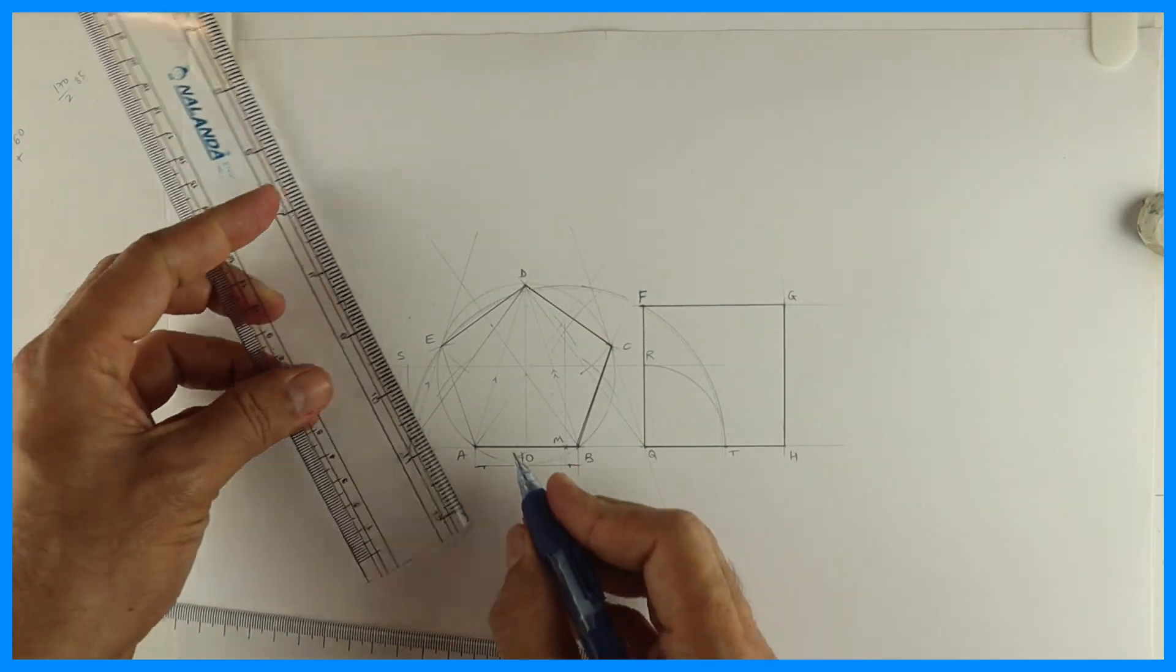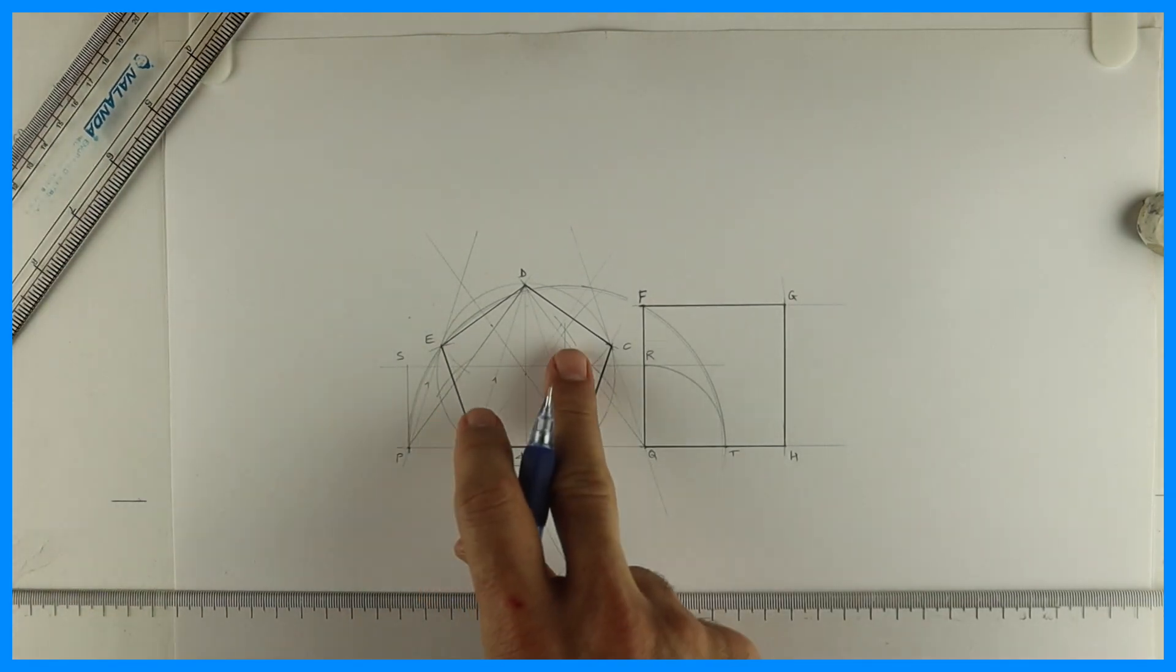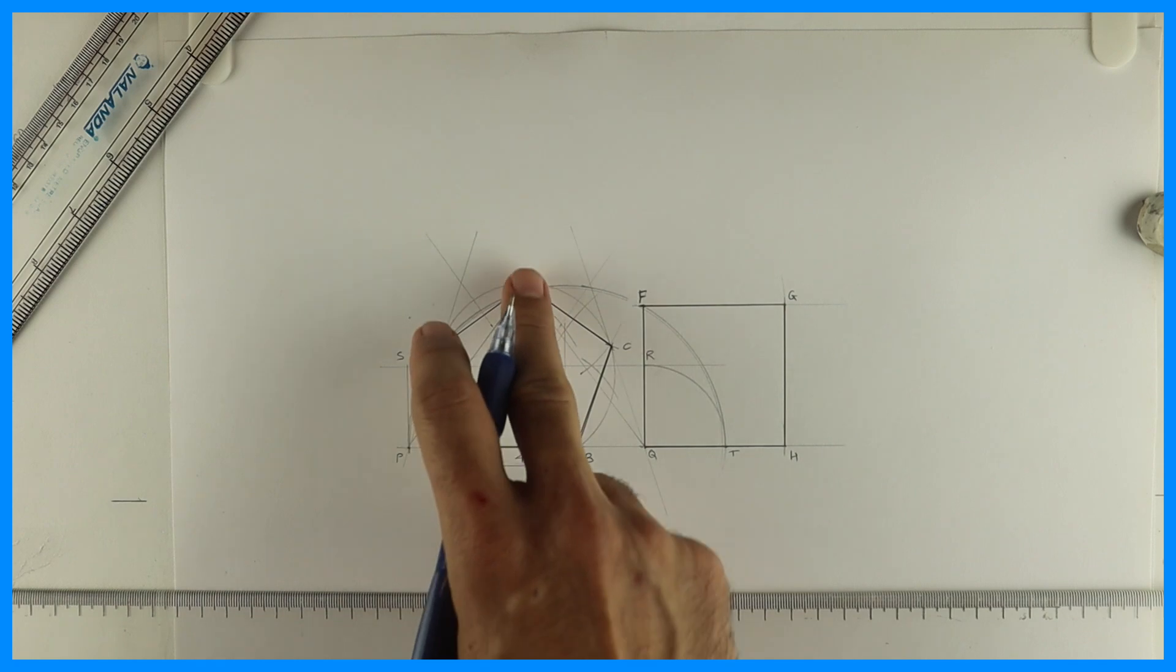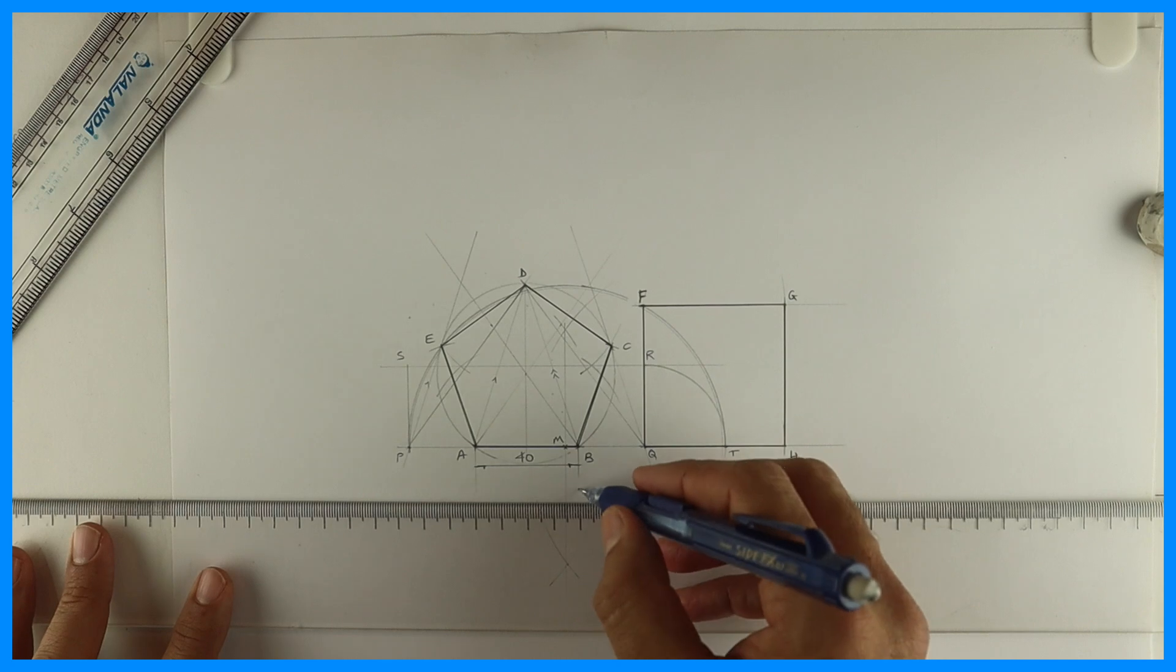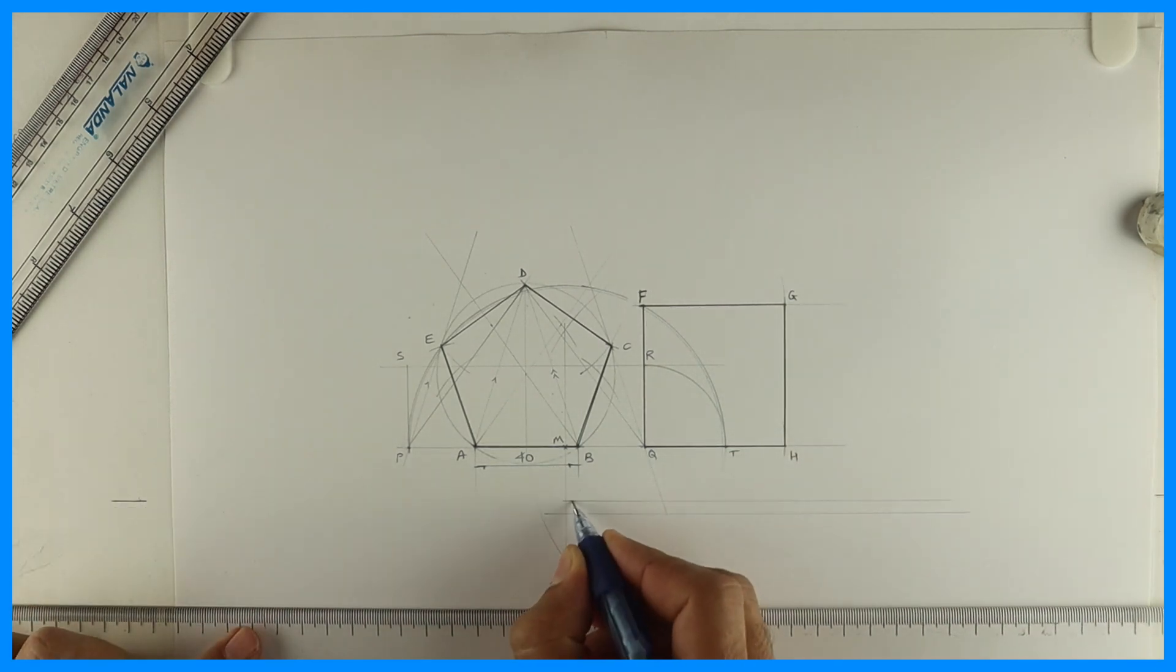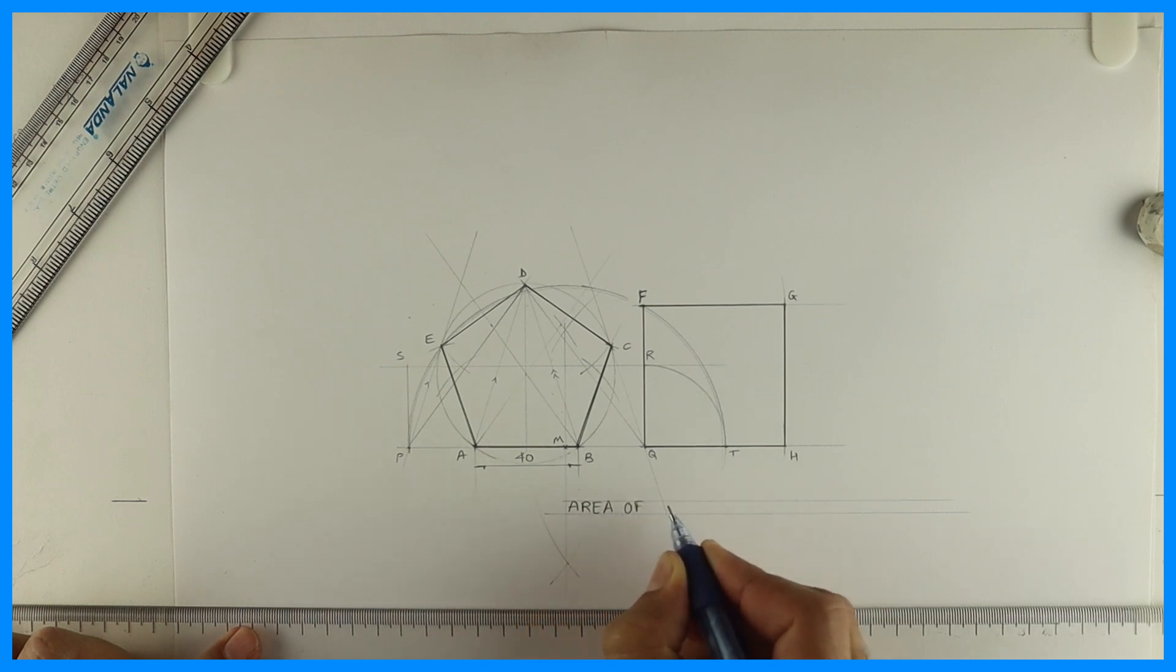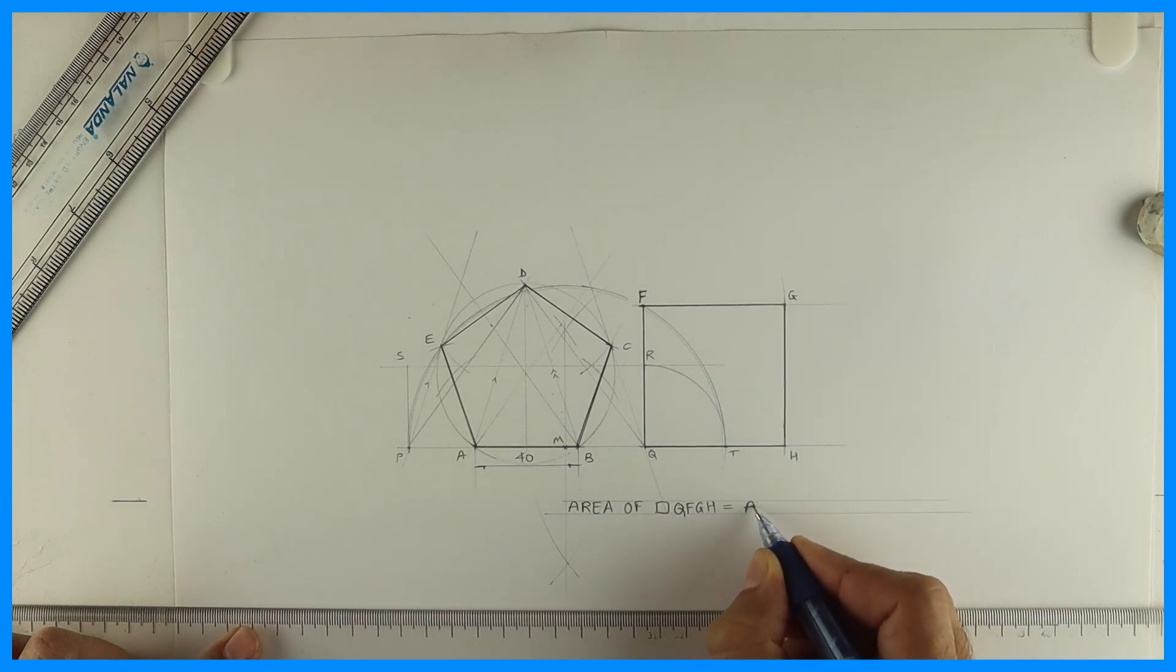So make sure that you draw question as well as answer dark, so pentagon and square should be dark and you should write answer also in guideline. So you draw guideline, write area of square. Answer: area of square QFGH equals to area of pentagon ABCDE.